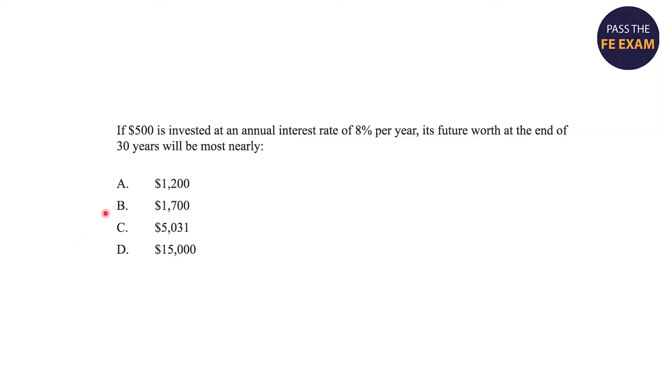Let's jump right into our problem here on engineering economics. The problem is if $500 is invested at an annual rate of 8% per year, its future worth at the end of 30 years will be most nearly what? And you can see the four options there.